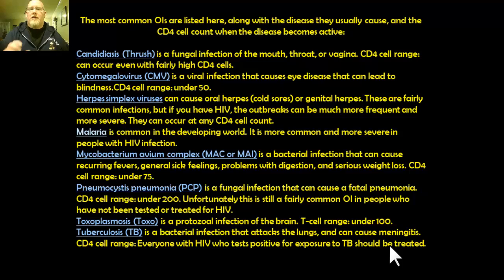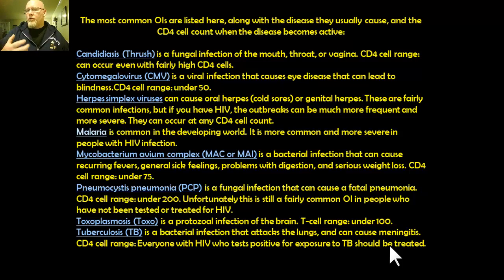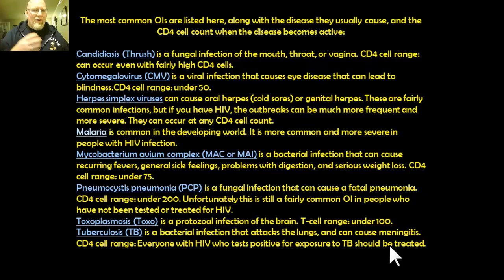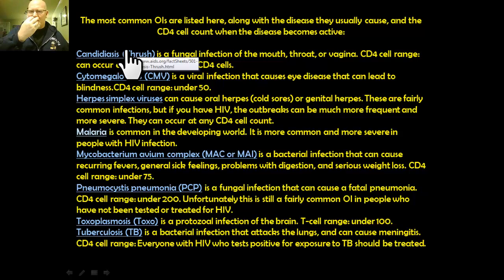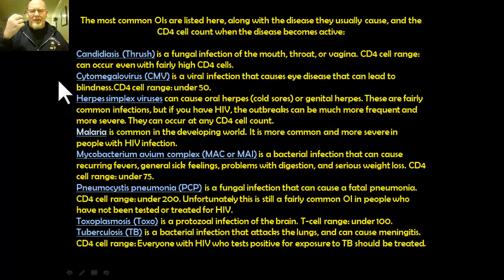Here are some of the most common opportunistic infections. When a person gets HIV, they're at risk of illnesses that people with a healthy immune system wouldn't necessarily worry about. Candidiasis, or thrush, is often one of the first signs of a weak immune system — it's a fungal infection inside the mouth that makes your tongue patchy and white. Cytomegalovirus (CMV) is an eye disease that causes blindness and eye problems affecting the ocular nerve. Herpes simplex virus, malaria — which is common in jungle and rainforest areas — and mycobacterium, which causes fevers, sweats, and a wasting syndrome where the person starts to waste away.